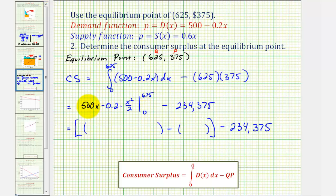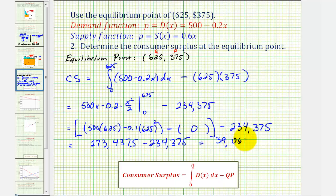So when we substitute 625, we'll have 500 times 625 minus 0.1 times 625 squared minus, notice when x is 0, these are both 0. Then we have minus 234,375. And this simplifies to 273,437.5 minus 234,375. And this difference comes out to 39,062.5.